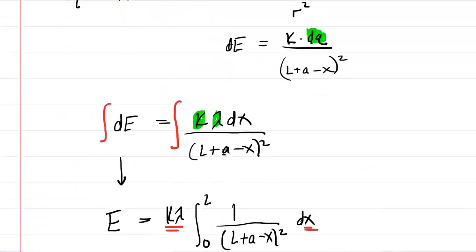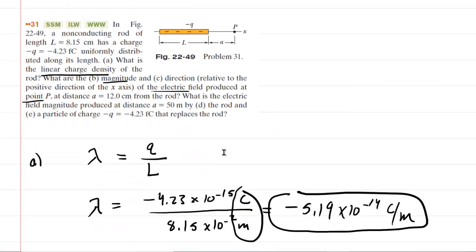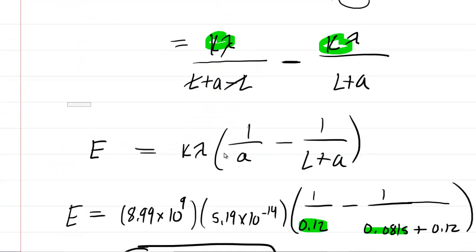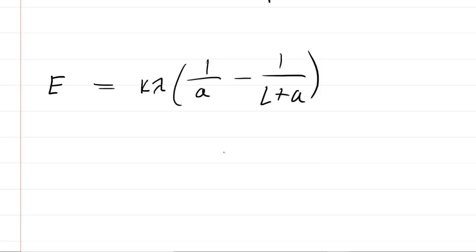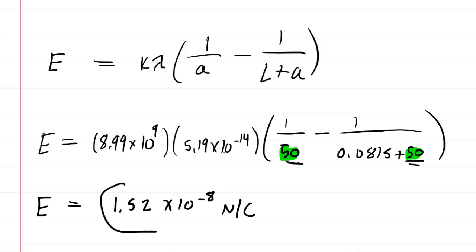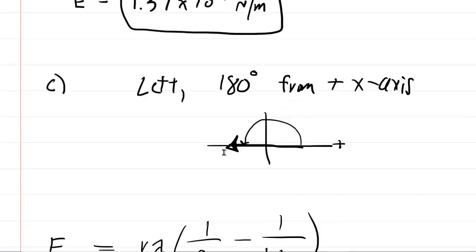We go on to part D, which wants the electric field magnitude produced at distance A equals 50 meters. That shouldn't be too bad because we did all this hard work to get the expression for the electric field in terms of all our variables. So for part D, we use that same equation but plug in 50 meters for lowercase a. When you punch this in, you should get about 1.52 times 10 to the negative 8 newtons per coulomb. This is the correct answer for the magnitude of the electric field when a equals 50 meters.